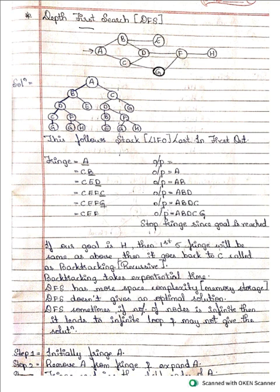In depth first search, what we do is: starting from one node, we dig deep into the path to find the goal node. From the starting node, till you find the required node — that is the goal node — you should go on searching in depth, not in the form of a breadth.